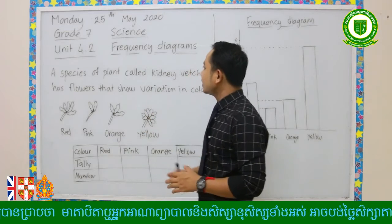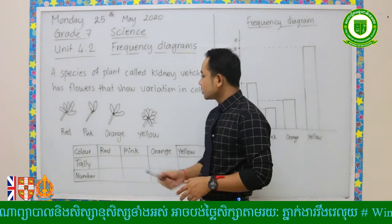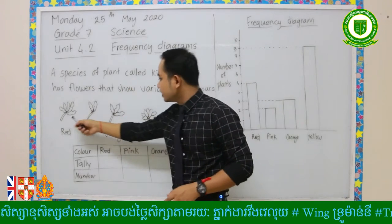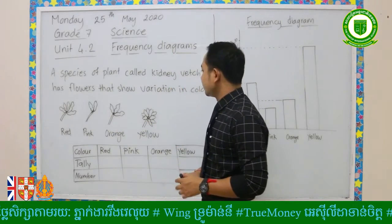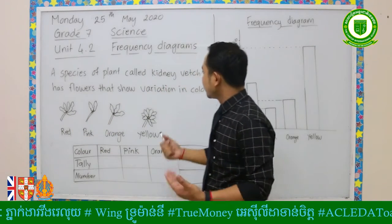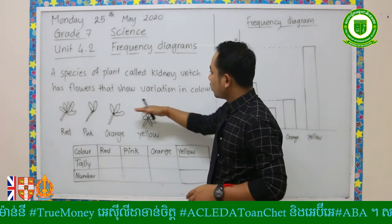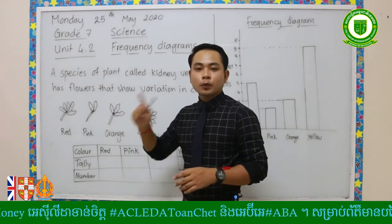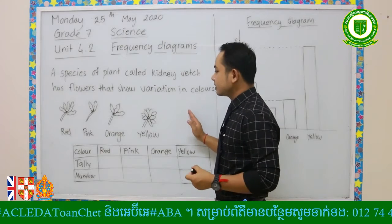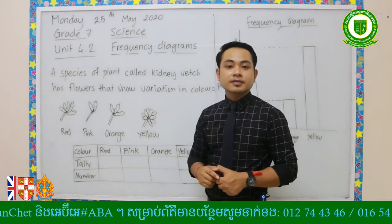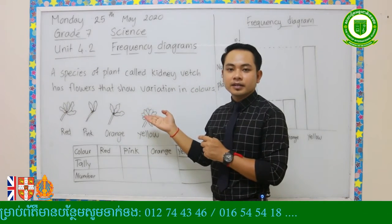Now let's take a look at this frequency diagram. I have one word problem for you right here. We have a species of a plant called kidney veg. This kidney veg has flowers that show variation in colors. They are all called kidney veg — it's the same flower, one family. One plant has different colors in their flowers.